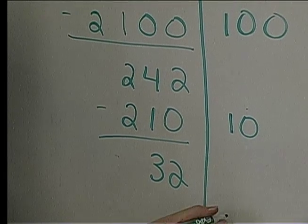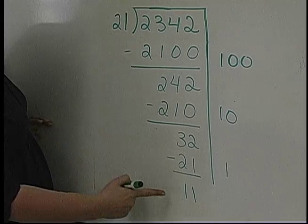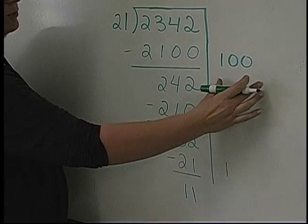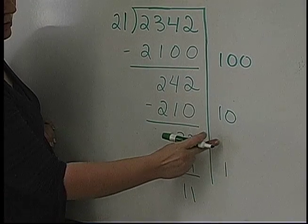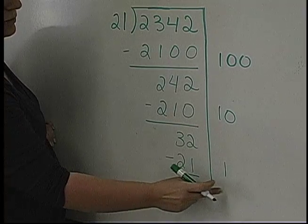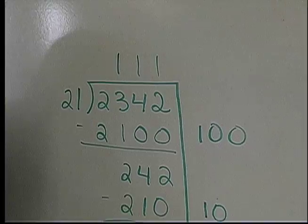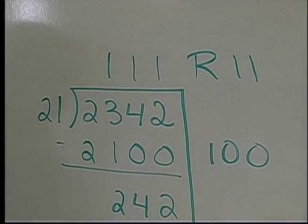And they'll say well I know that one twenty-one is 21. I know that 21 doesn't go into 11 so I'm all done. They'll look at the partial quotients that we have here. 100 plus 10 plus 1 is 111. And they're left with a remainder of 11.